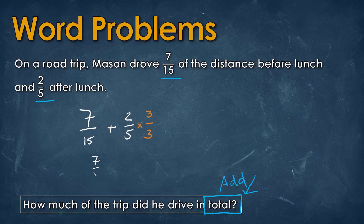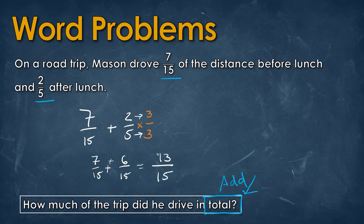We keep 7 over 15 the same, and multiplying straight across for the second fraction gives us 6 over 15. Adding these together, we keep the same denominator on the bottom and the numerator is 7 plus 6, which gives us 13. So the answer is 13 over 15.